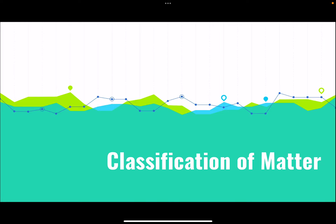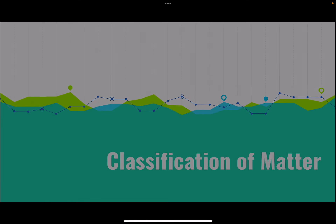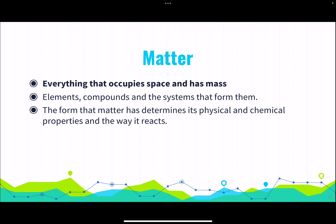We are going to talk today about how matter is classified. Matter is everything that occupies space and has mass. Elements, compounds, and the systems that form them are matter. The form that matter has determines its physical and chemical properties and the way it reacts. In chemistry, we want to know how matter is and what its properties are because we want chemical reactions — and we want chemical reactions because we want to make new products that make our life easier.